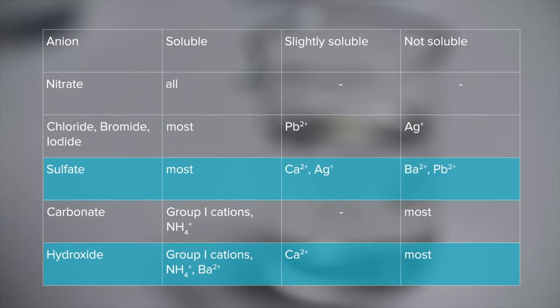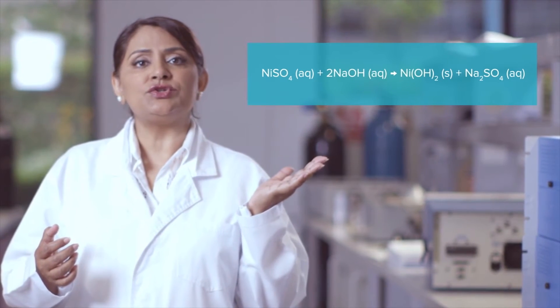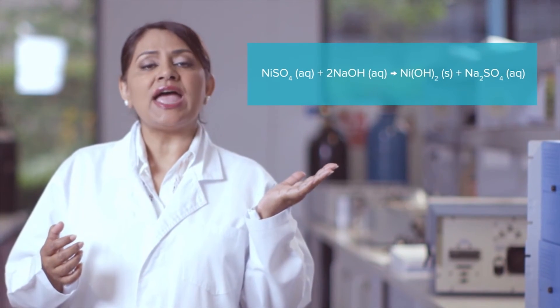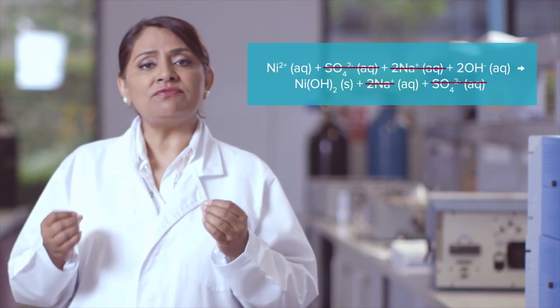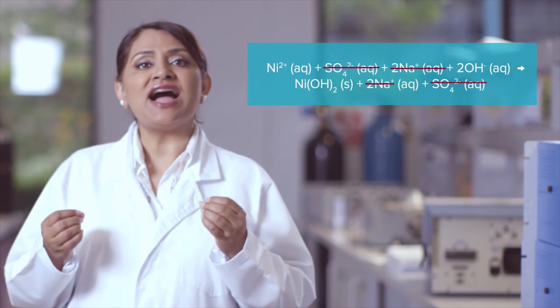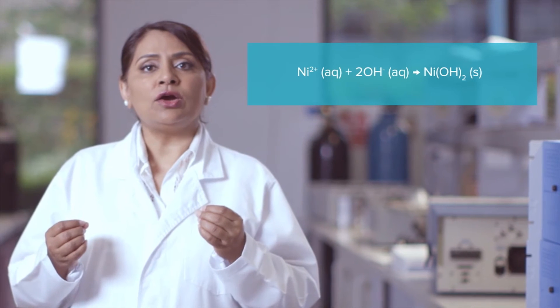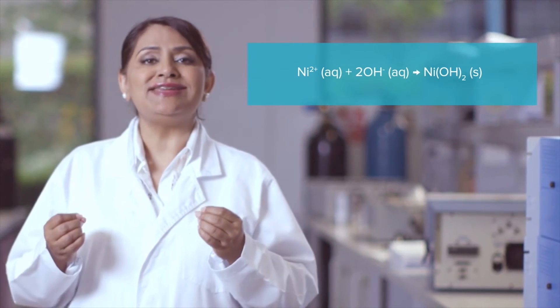Let's try another example. Will a precipitate form when solutions of nickel sulphate and sodium hydroxide are mixed? According to our solubility rules, nickel hydroxide is not soluble and so will form a precipitate. The complete formula equation for this reaction is: nickel sulphate solution reacts with sodium hydroxide solution to form a precipitate of nickel hydroxide and sodium sulphate solution. The ionic equation is shown here, and cancelling out the sodium and sulphate spectator ions, we're left with the net ionic equation: nickel ion plus two hydroxide ions gives solid nickel hydroxide.